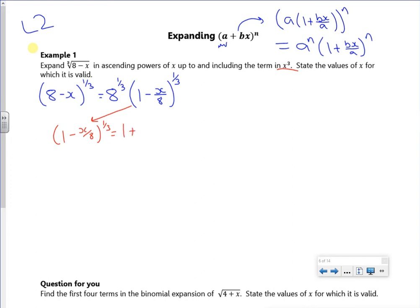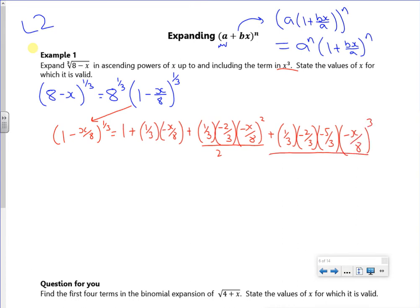So it's going to be 1 plus n times x plus n times n minus 1, so be really careful on that one, times x squared over 2 plus n times n minus 1 times n minus 2 over 3 times 2.